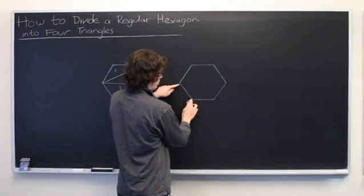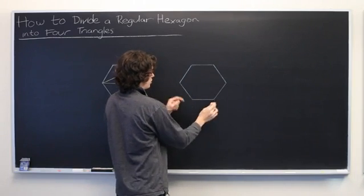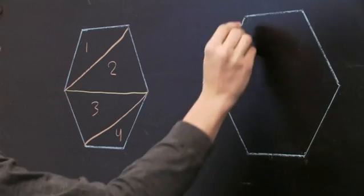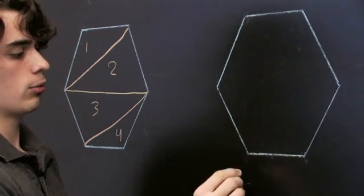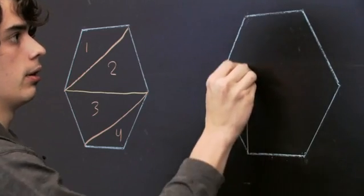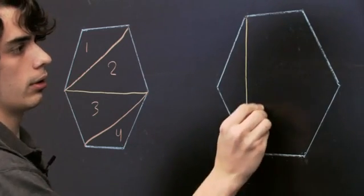So, these two, they're already lines connecting so we don't need to do that again. But these three do not have lines connecting to this vertex. So, we'll draw lines there. Like so.